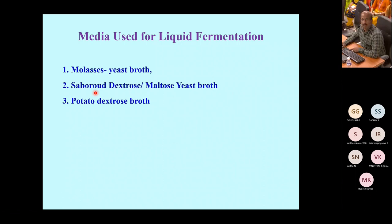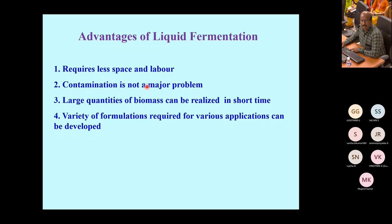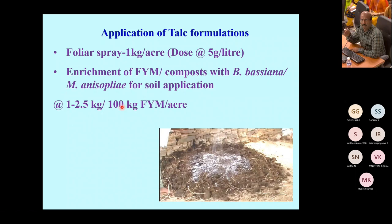For the liquid formulation, we use only Sabouraud Dextrose Yeast broth in our lab. It requires less space and labor, contamination is not a major problem, large quantities of biomass can be produced in a short time, and different formulations can be applied. For the talc-based formulation, foliar spray is recommended for chewing pests, while enrichment of farmyard manure with Beauveria and Metarhizium is used for soil application — for example, for white grub in sugarcane, areca nut, and rhinoceros beetle applied to the root zone.